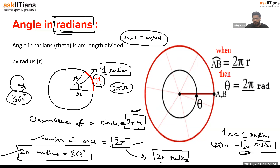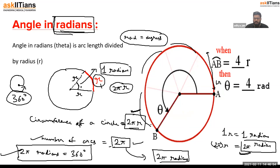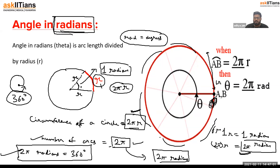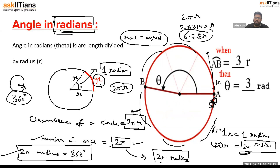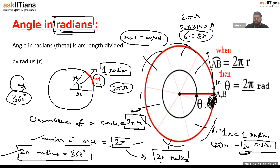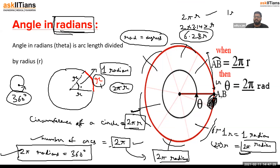Looking at this diagram — you can see arc AB starting and moving: this is 1r, 2r, 3r, 4r, 5r, the sixth portion 6r, and then a remaining portion. Because 2π equals 3.14, multiplied by r gives 6.28r — meaning 6 complete r-lengths plus 0.28r, which is 28% of r. So 1r equals 1 radian — that is the actual meaning of angle in radians.